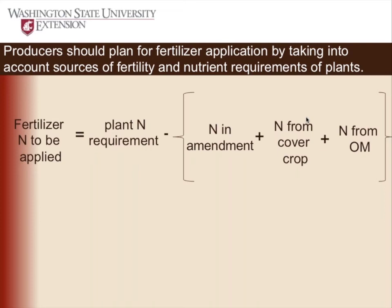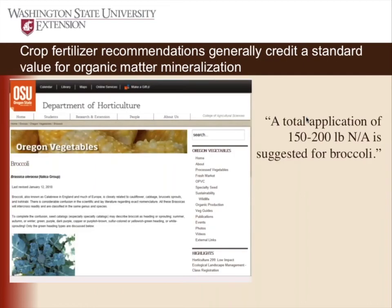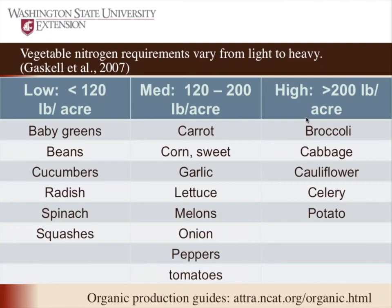For the nutrient nitrogen requirement, we can look at nutrient management guides. Most of these have not been written for organic producers. For example, this one from Oregon State says a total application of 150 to 200 pounds of nitrogen per acre is suggested — they're assuming some nitrogen contribution from organic matter, but it's a black box. There's another publication for organic growers that groups crops into low, medium, and high feeders, which is a great approach so you're not giving everything the same recipe.